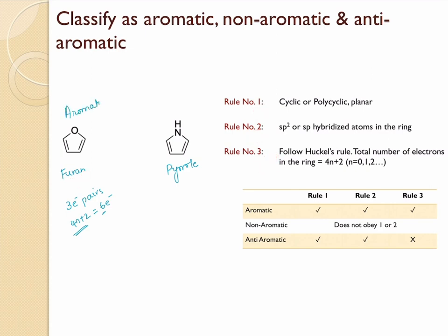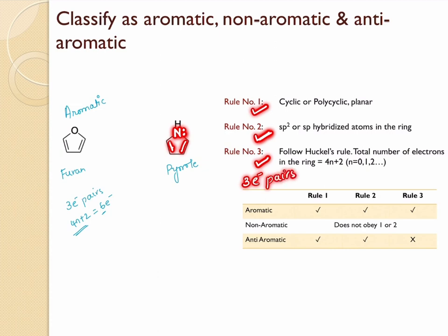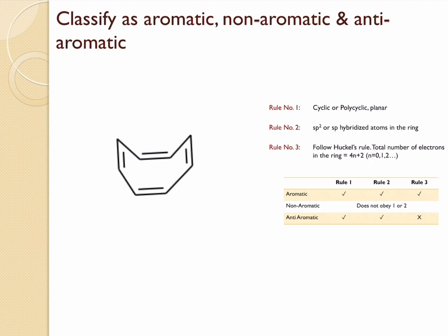For pyrrole, the same reasoning applies. Instead of oxygen, we have nitrogen, which has one lone pair of electrons parallel to the p orbital, allowing it to participate in electron delocalization. The structure is cyclic, all atoms are sp2 hybridized or can make themselves sp2 hybridized, and it follows Hückel's rule with three electron pairs — six electrons total participating in delocalization. So pyrrole is also aromatic.